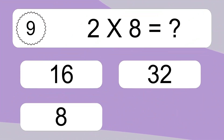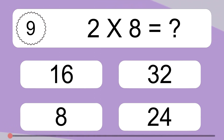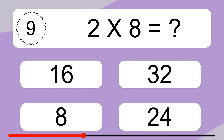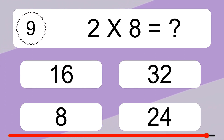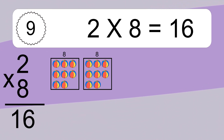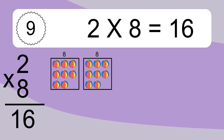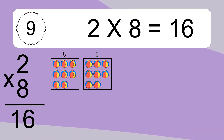2 x 8 equals what? 2 x 8 equals 16. We have 2 boxes and each box has 8 colorful balls inside. If you count all the balls in all the boxes together, you will have 2 x 8 balls. This equals 16 balls.